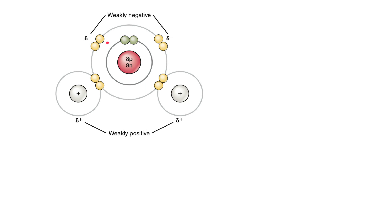This means that the electrons are more likely to be found around the oxygen atom than they are to be found around the hydrogen atoms. So you can see here that the electrons are all shown around the oxygen, while the hydrogen atoms are lacking any electrons around this portion of the atoms.